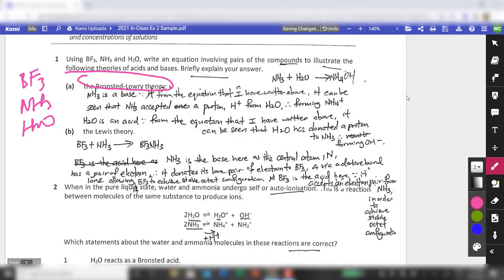For Bronsted-Lowry theory, you focus on H, which is protons. Because if you look at the definition for Bronsted-Lowry theory, we are looking at proton donor or proton acceptor. So in this case, I think it's relatively straightforward that going by what you have learned in secondary school, ammonia here will act as a weak base. So it will accept protons from H2O. If you just do a simple write-up, I think that will be sufficient.